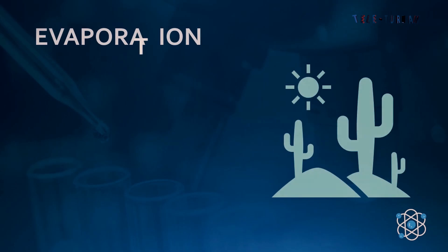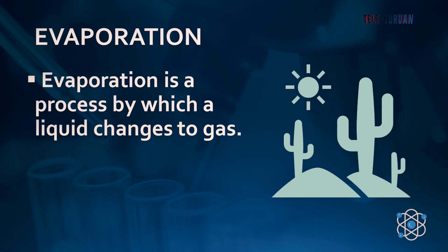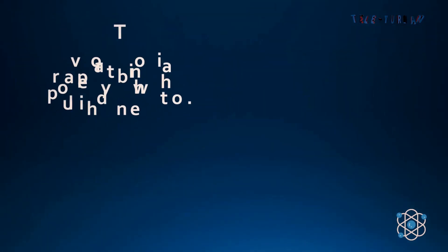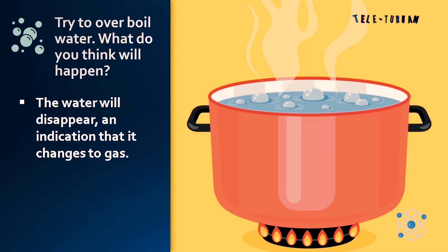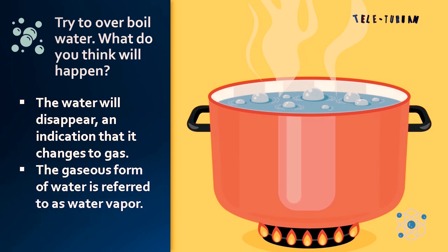Next, we have evaporation. Evaporation is a process by which a liquid changes into gas. Try to overboil water — what do you think will happen? The water will disappear, an indication that it changes to gas. Did you know that the gaseous form of water is referred to as water vapor?